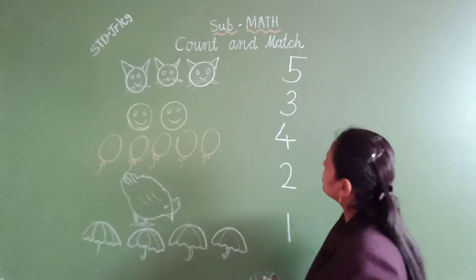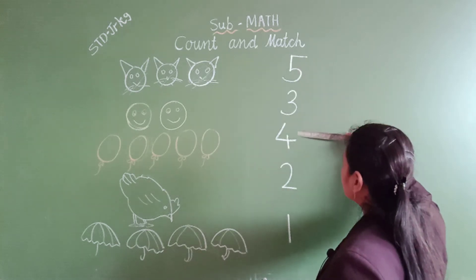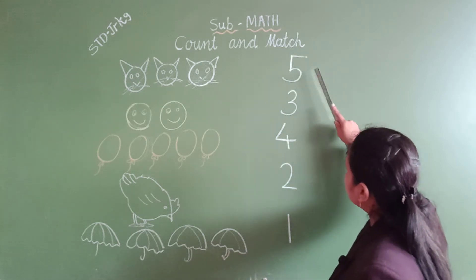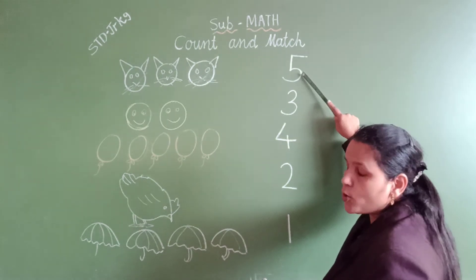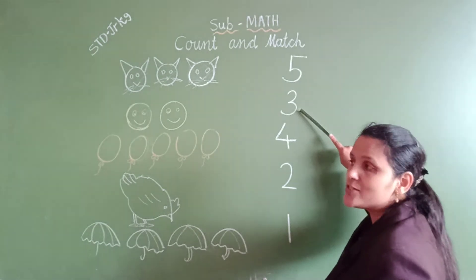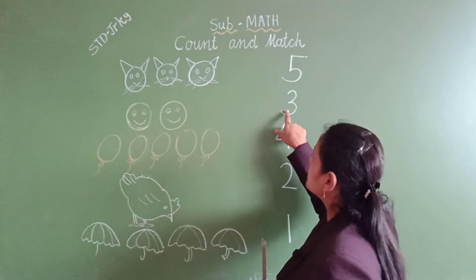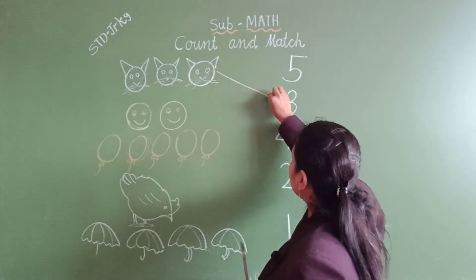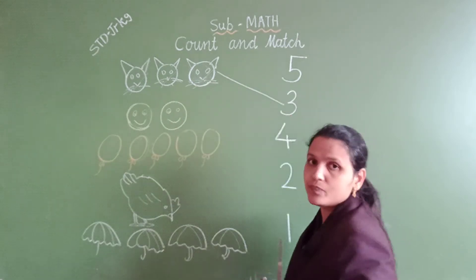So, three — we write the number three. Which number is three? Is it this three? Yes! So we have to match the cat with number three. We have to match cat and number three.